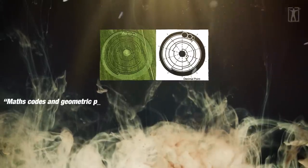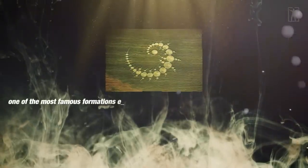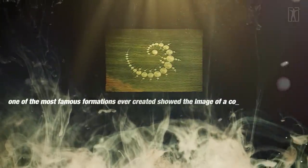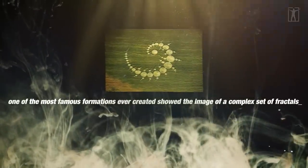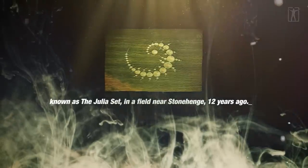Maths, codes, and geometric patterns have long been an important factor in crop circle formations. One of the most famous formations ever created shows the image of a complex set of fractals known as the Julia set in a field near Stonehenge 12 years ago.